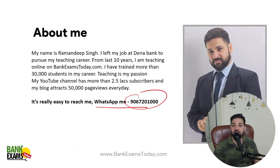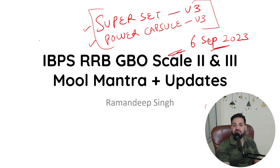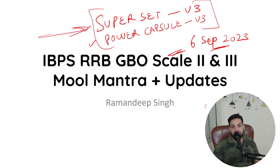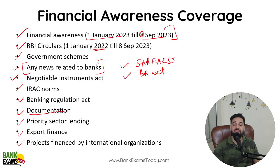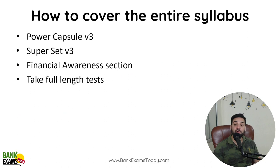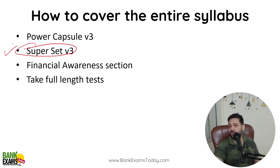The best way to cover all of that is Superset 3. With Superset 3 you can quickly cover everything — 650 MCQs. I can assure you that from these 650 questions, you will get around 15-16 questions in the exam. Within 1 or 2 days you can easily cover the entire Financial Awareness — at least get a solid revision. Superset is very important; you must read it because it provides complete coverage.